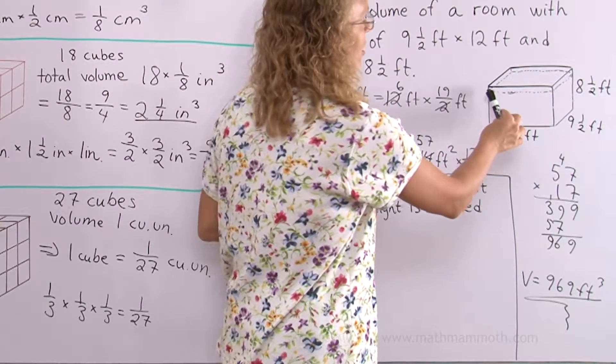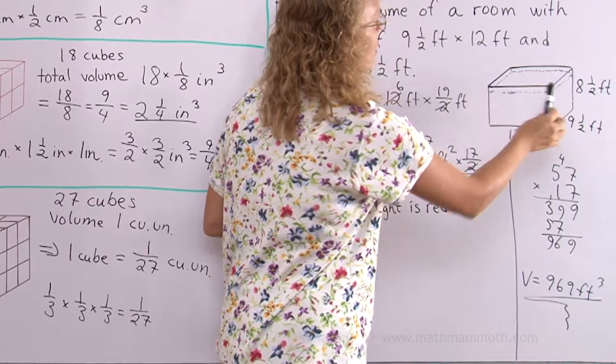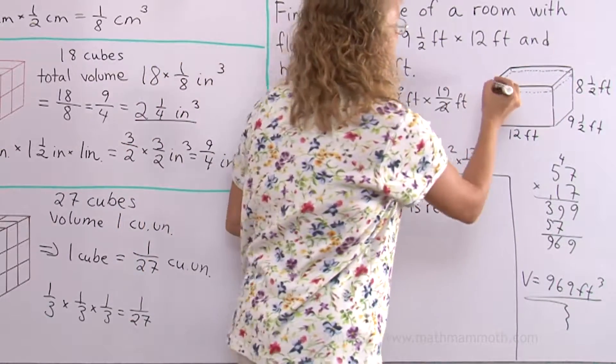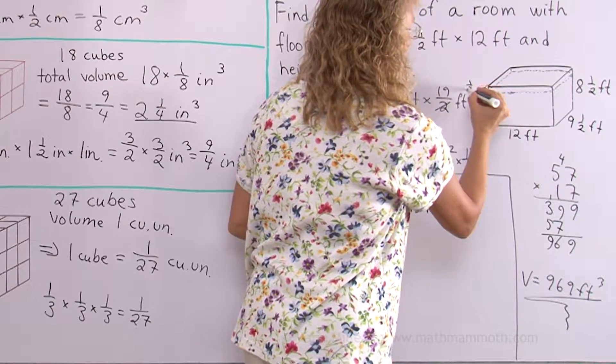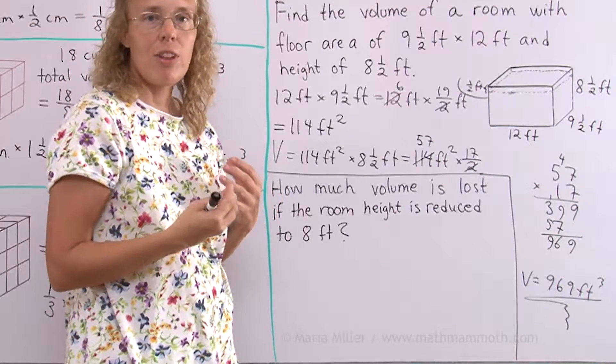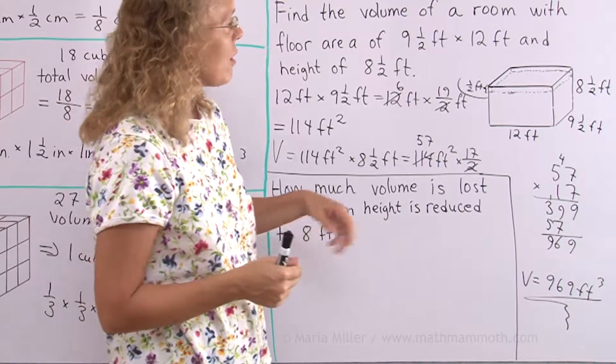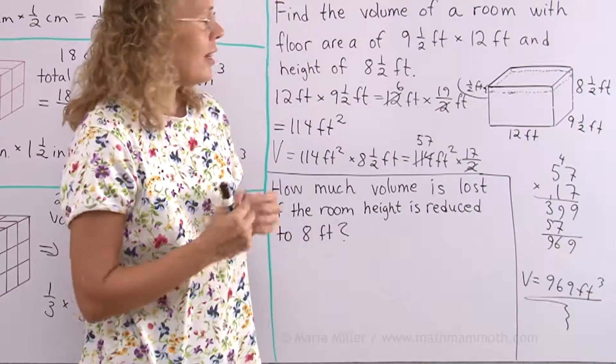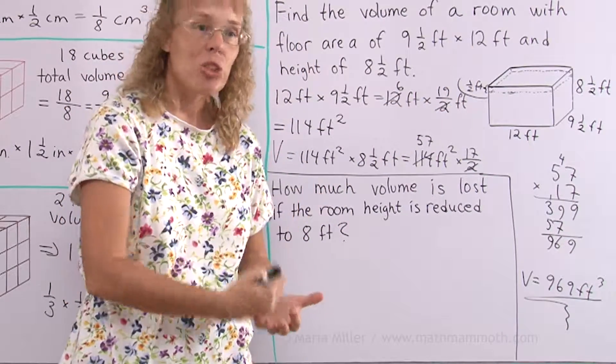It is a box shaped or rectangular prism here too. And its height is half a foot. Because it is reduced by half a foot. So I can just calculate the volume of a rectangular prism with the same floor area and height of half a foot. And that's how much the volume is reduced.